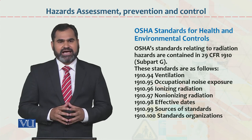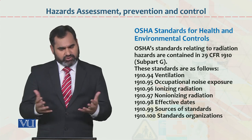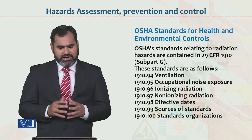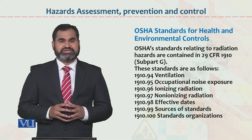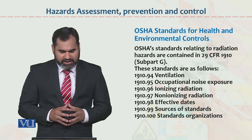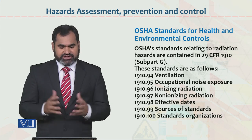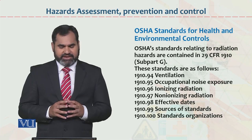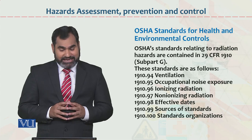Occupational noise exposure — یہ دوسرا level ہے. Ionizing radiation — تیسرا level ہے. Non-ionizing radiation — چوتھا level ہے. Effective dates. (These are the second, third, and fourth levels/standards under the subpart.)